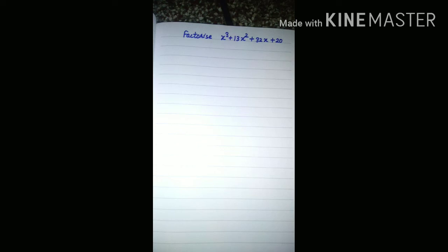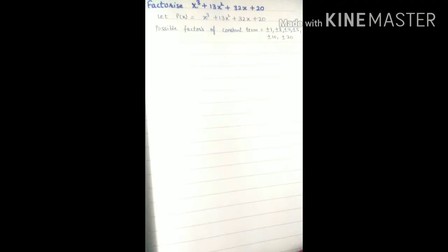Okay, now the question is: factorize x³ + 13x² + 32x + 20. First, we put the given polynomial equal to P(x). P(x) = x³ + 13x² + 32x + 20. Now we have to find possible factors of constant term 20.